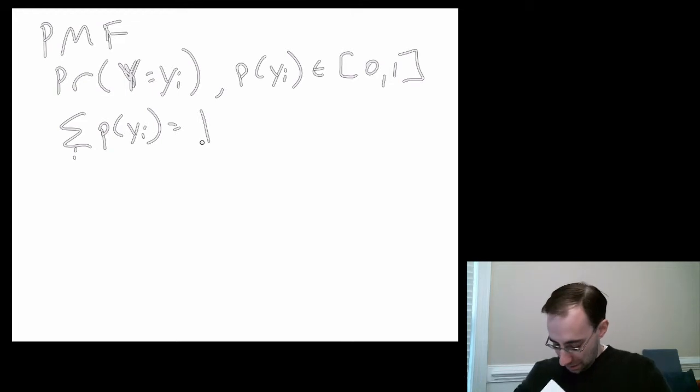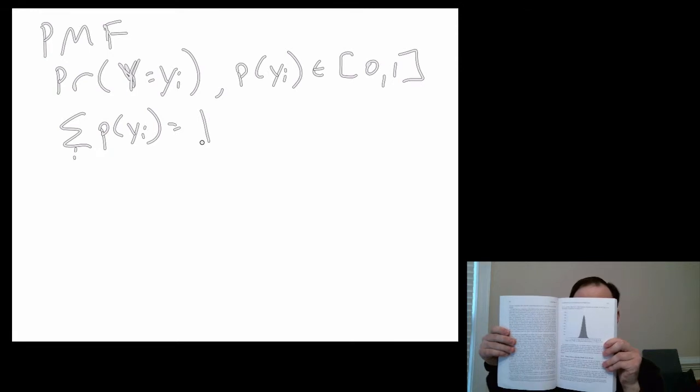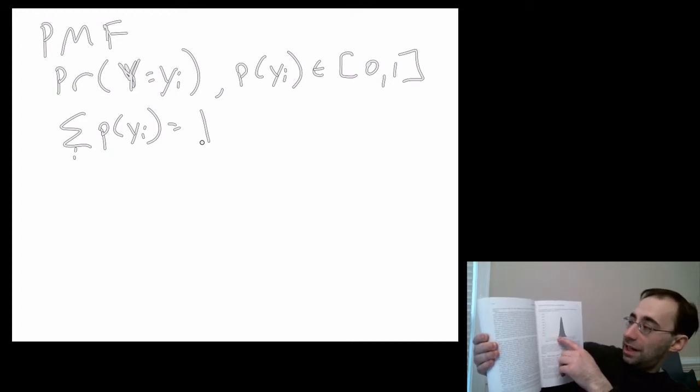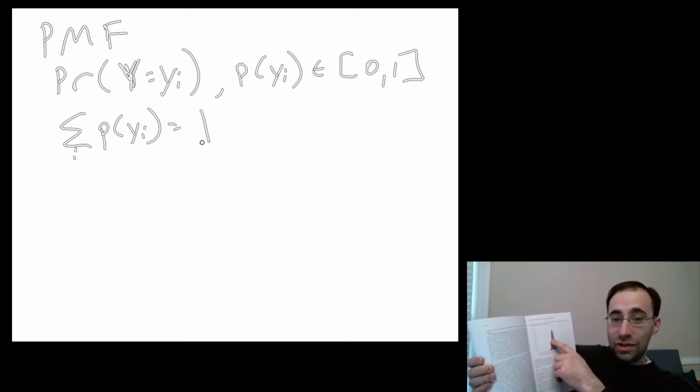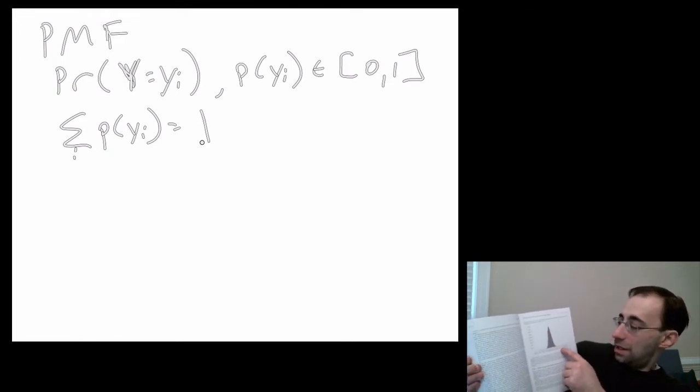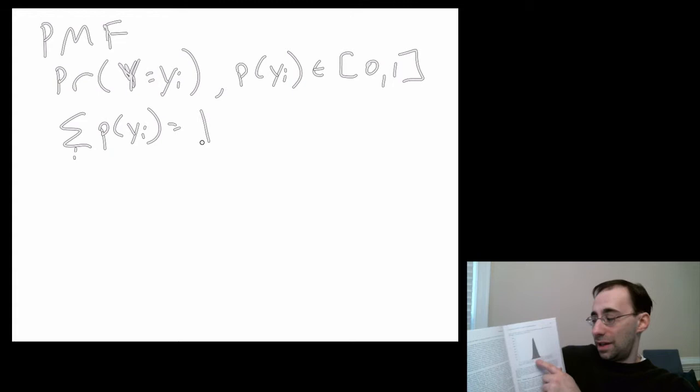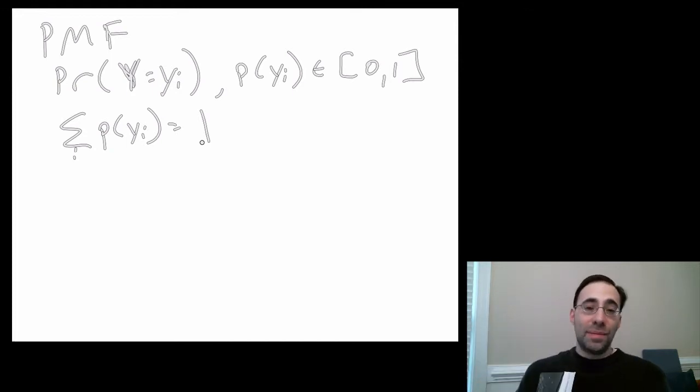Here is one. This is a binomial distribution with certain parameters, but the important part is the height of each of these bars is the probability of drawing that particular value. In this case, there are 100 draws, and we'll talk about that more later. As you go towards the middle here, you get higher probabilities of drawing that particular value. This is one possible probability mass function. There are others, and we'll talk about them in a couple modules.